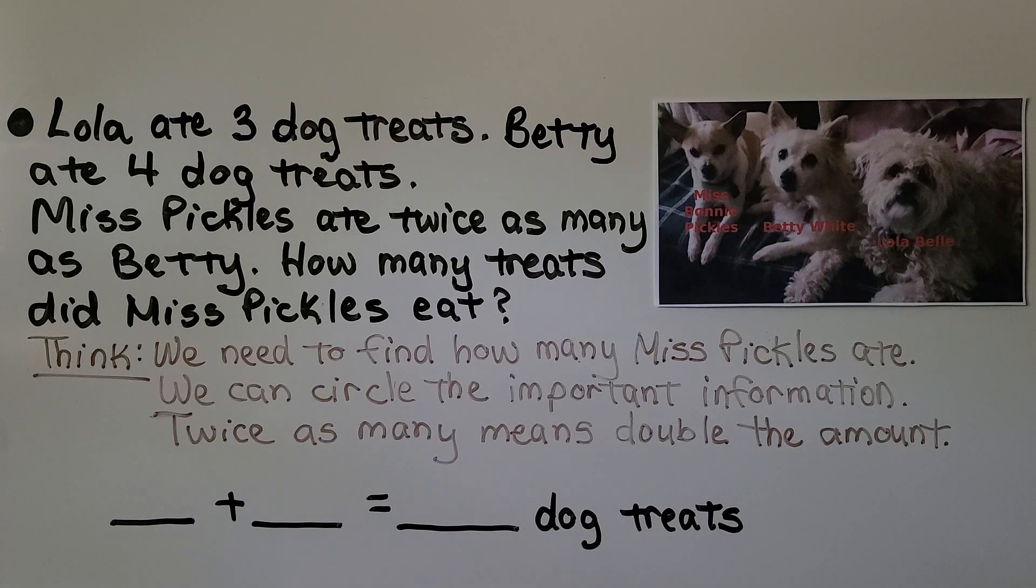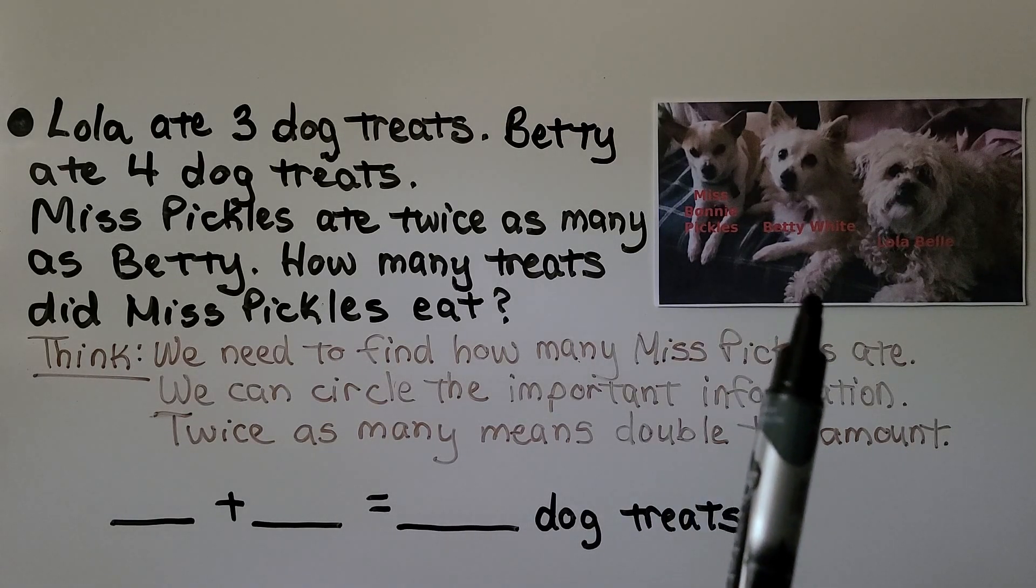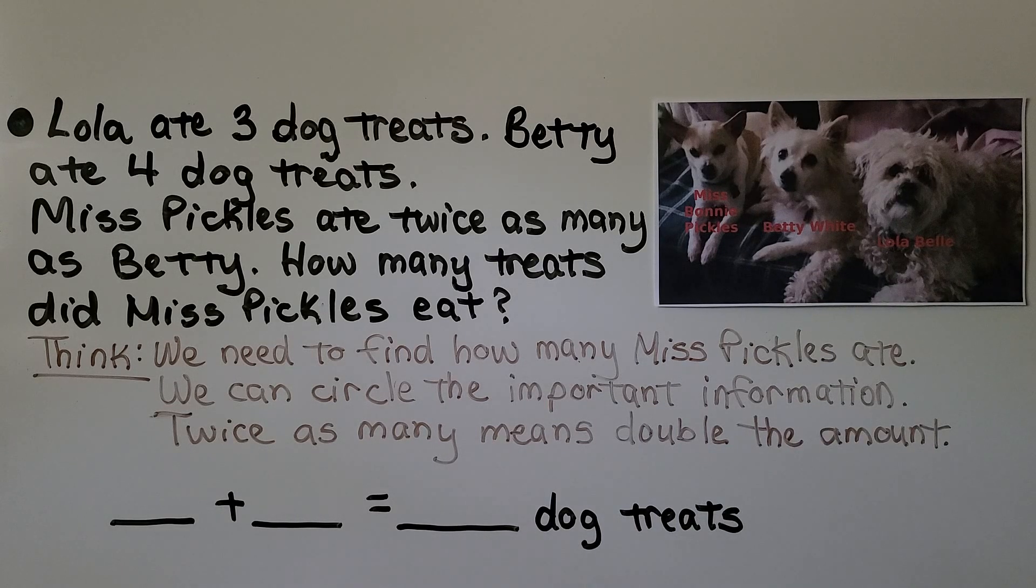Some of you know I have 3 dogs. This is Miss Bonnie Pickles. This is Betty White. And that's Lola Belle. Lola ate 3 dog treats. Betty ate 4 dog treats. Miss Pickles ate twice as many as Betty. How many treats did Miss Pickles eat?